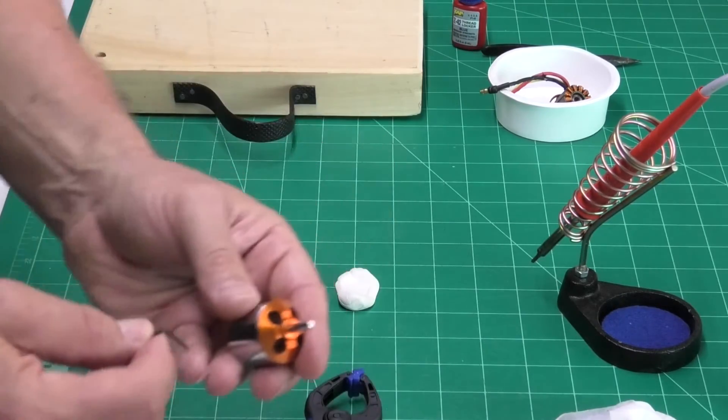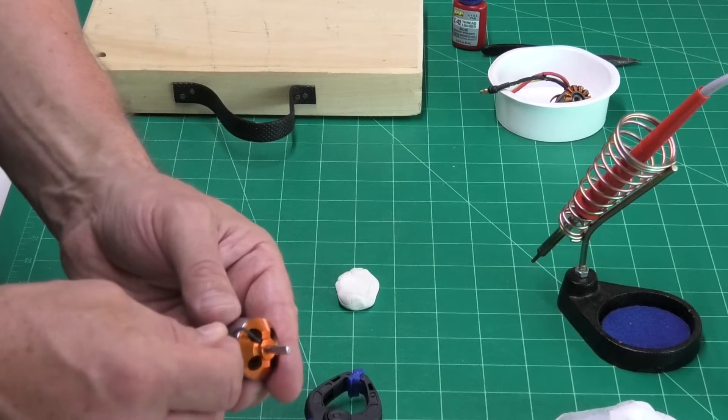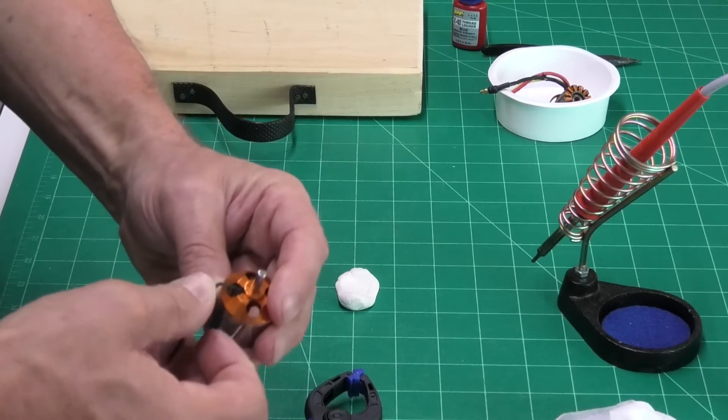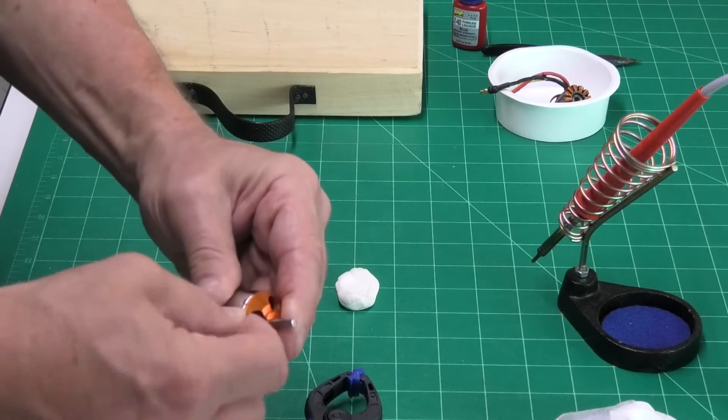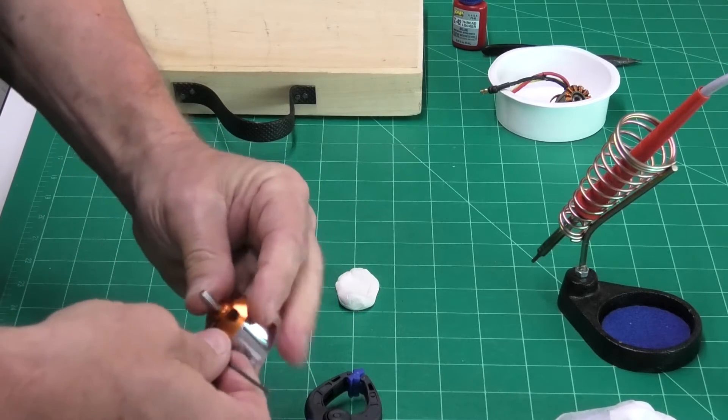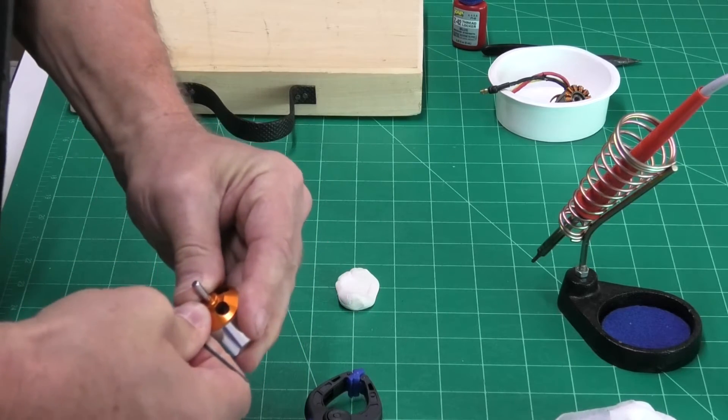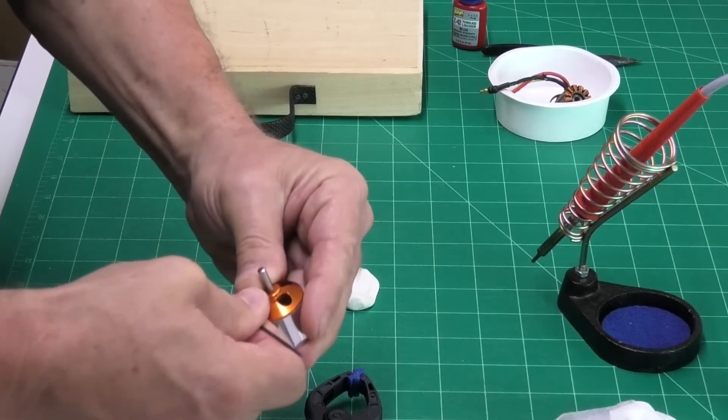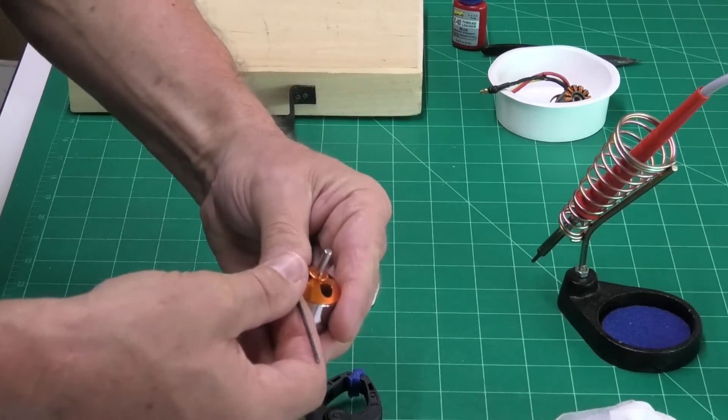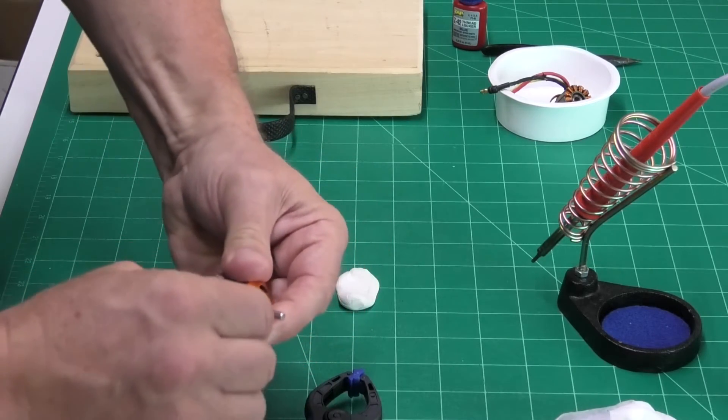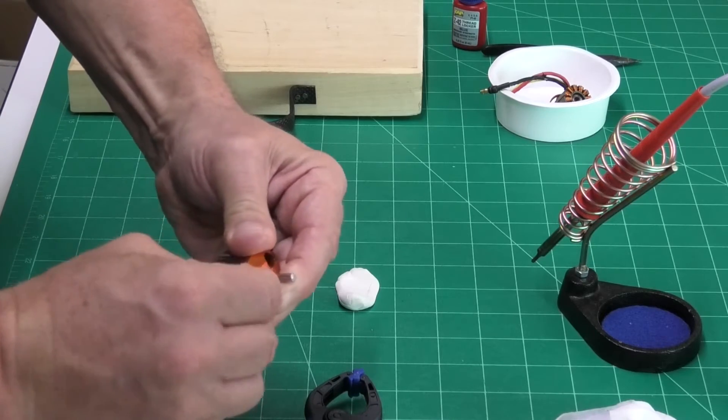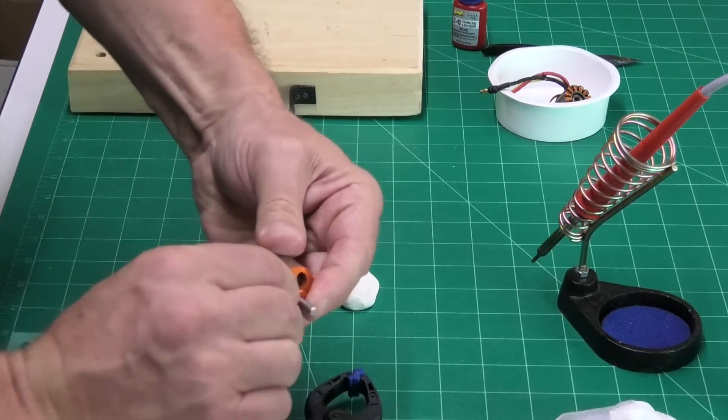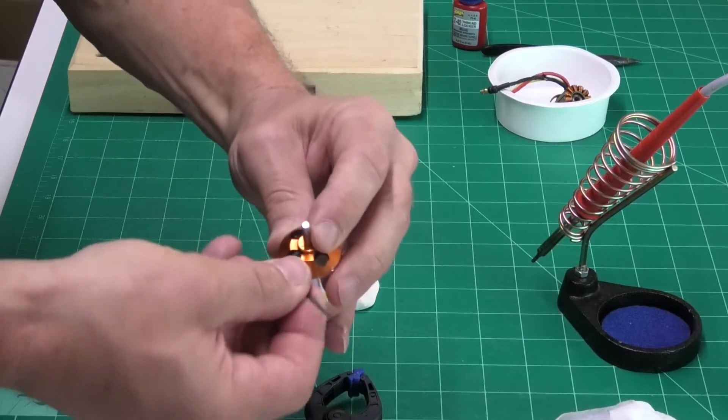And now, we'll have another go with the allen key. See if we have more luck. It's just starting to move now. It's just come loose a little bit. Just work it backwards and forwards just to free it off.